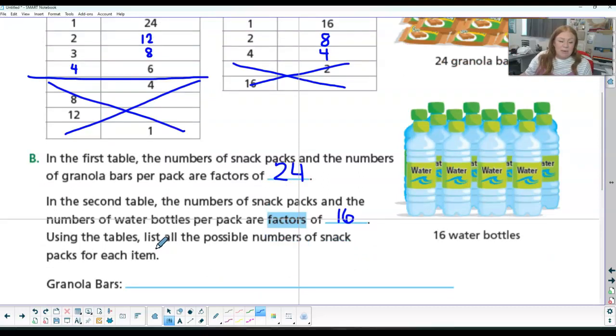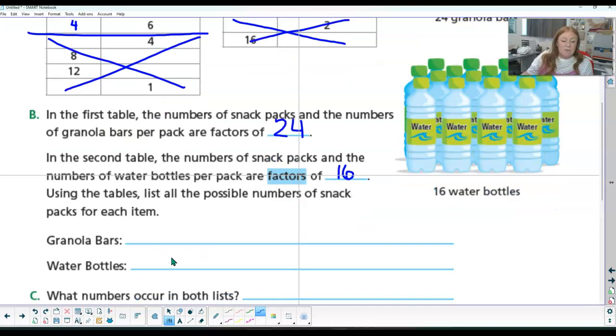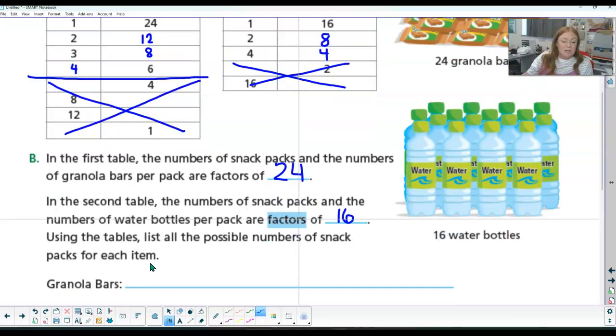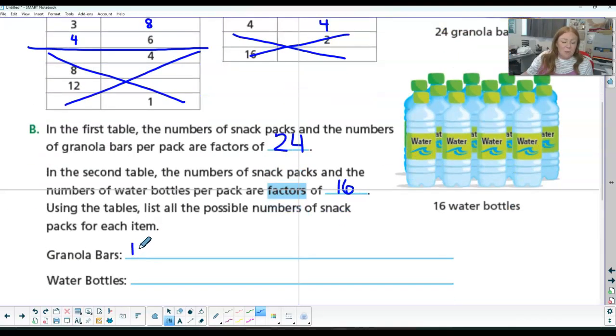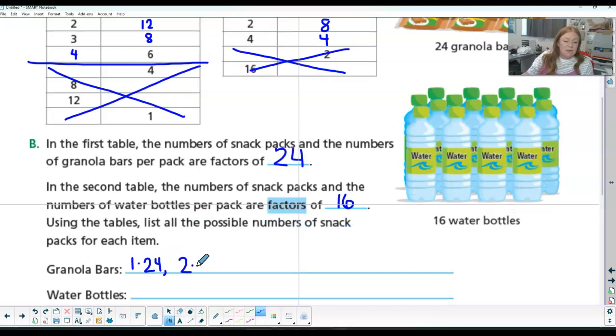So using the table, list all the possible numbers of snack packs for each item. So we could have one pack of 24, 2 packs of 12, we could have 3 packs of 8, and 4 packs of 6.